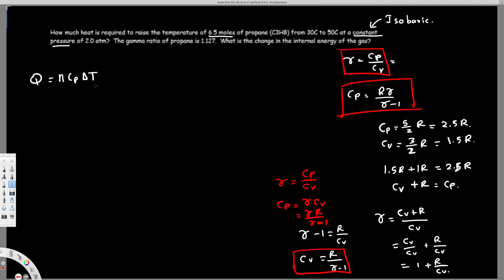Here we have a constant pressure isobaric process, so we use CP. Let's find CP first. CP equals R gamma over gamma minus 1, where R is 8.3145, gamma is 1.127, and gamma minus 1 is 0.127. Calculating this gives CP equals 73.78 J/(mol·K).